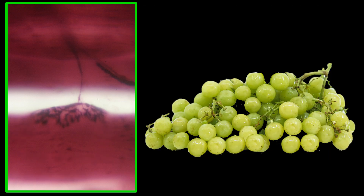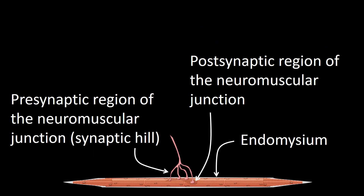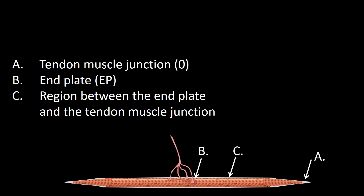They look to me like a cluster of grapes. In this frame, I have introduced a cartoonish representation of the neuromuscular junction. In this new frame, I am representing the muscle fiber with the endomysium — the endomysium corresponding to the gray area surrounding the muscle fiber — going from one end to the other end of the muscle, and labeled its different parts.